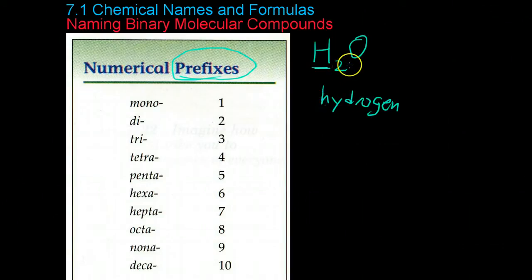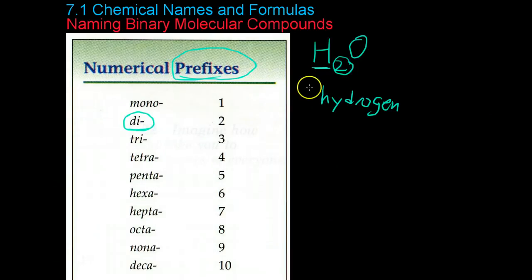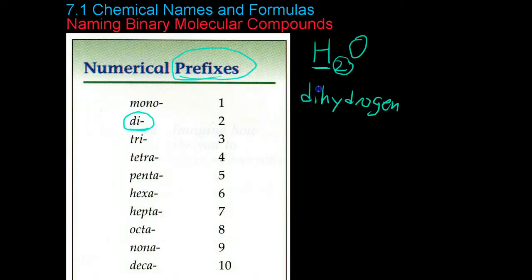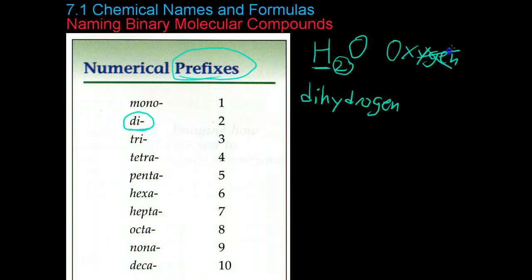And then you find the number of that element, in this case two, and you go over to your chart and you find what's the prefix for two. In this case it's di. So you write that prefix in front of the first element. And then you move on to the second element. And you see, okay, what is this element? It's oxygen. And then you take off the ending, much like in ionic compounds, and replace it with -ide.